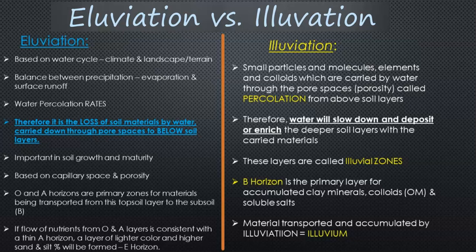To understand these terms we have to discuss the primary reason they occur in the soil, and that is the water cycle — precipitation, evaporation, transpiration, overland flow — the process of meteoric water moving from the atmosphere with gravity down to the soil, hitting the soil and what happens to it.